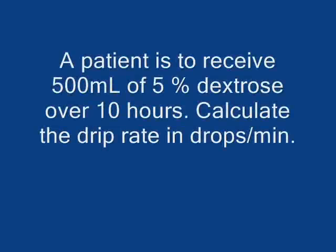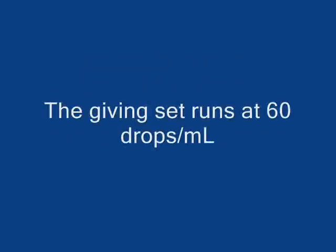Here is an example of a drip rate calculation. A patient is to receive 500 ml of 5% dextrose over 10 hours. Calculate the drip rate in drops per minute. The giving set runs at 60 drops per milliliter.